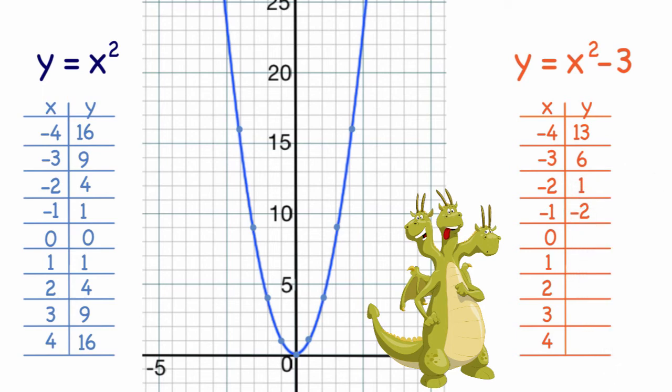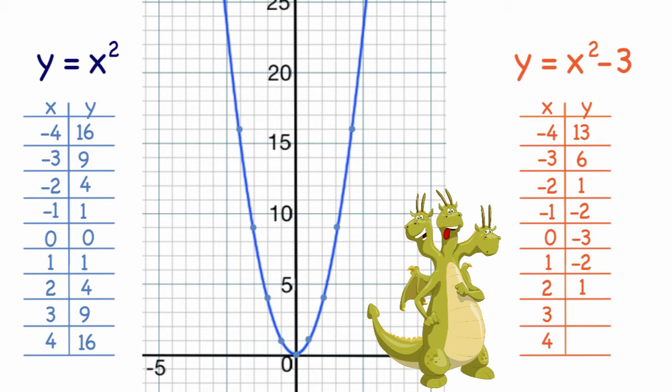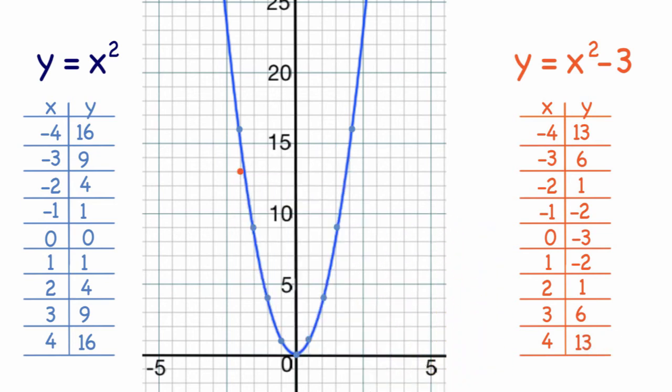0 squared is 0 minus 3 is negative 3; 1 squared is 1 minus 3 is negative 2; 2 squared is 4 minus 3 is 1; 3 squared is 9 minus 3 is 6; 4 squared is 16 minus 3 is 13. So now I'm going to graph this.